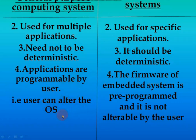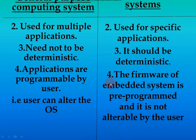The fourth point: in GPCS, applications are programmable by users and users can alter the OS — for example, Java or Unix can be changed as needed. But in embedded systems, the firmware is pre-programmed, meaning it is already programmed and is not alterable by the user. It is pre-programmed and must be used as is; we cannot change it.